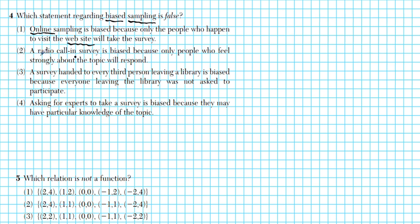A radio call-in survey is biased because only people who feel strongly about the topic will respond. If you don't care about the topic, are you going to call in? No. So we can see the bias — it's only people that do care about the topic that are going to call in. So it's biased towards those who feel strongly about the topic. This is also true.